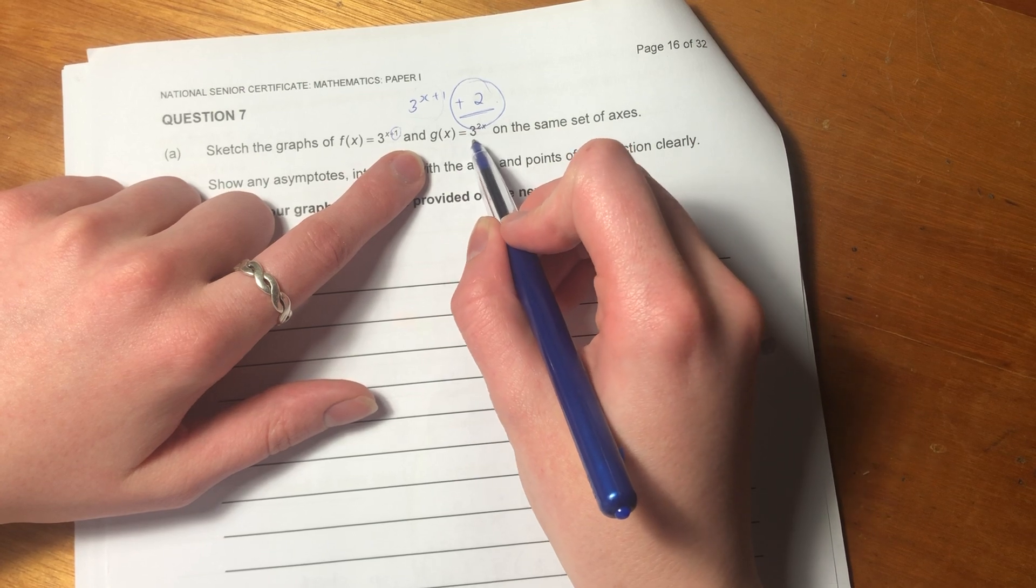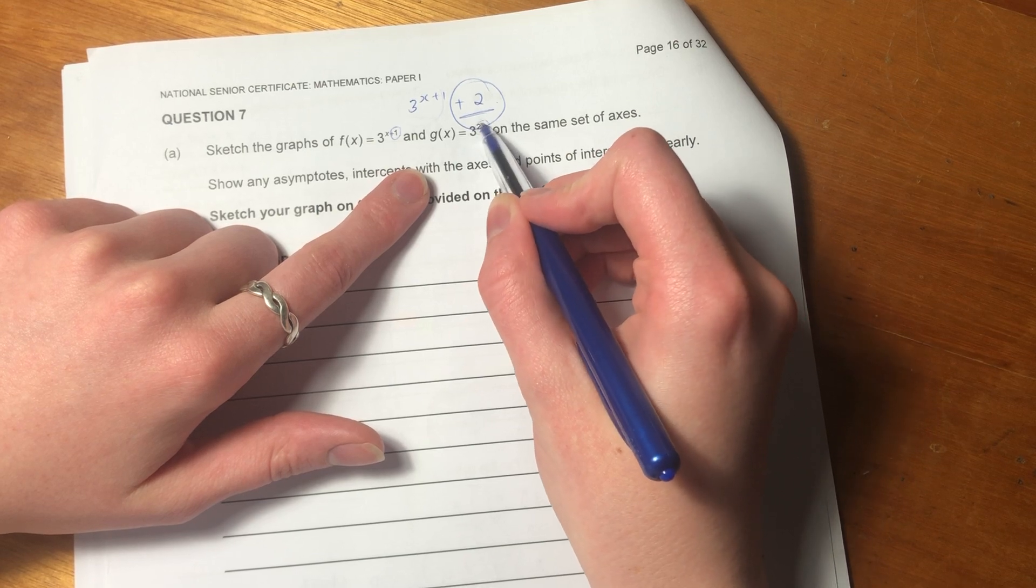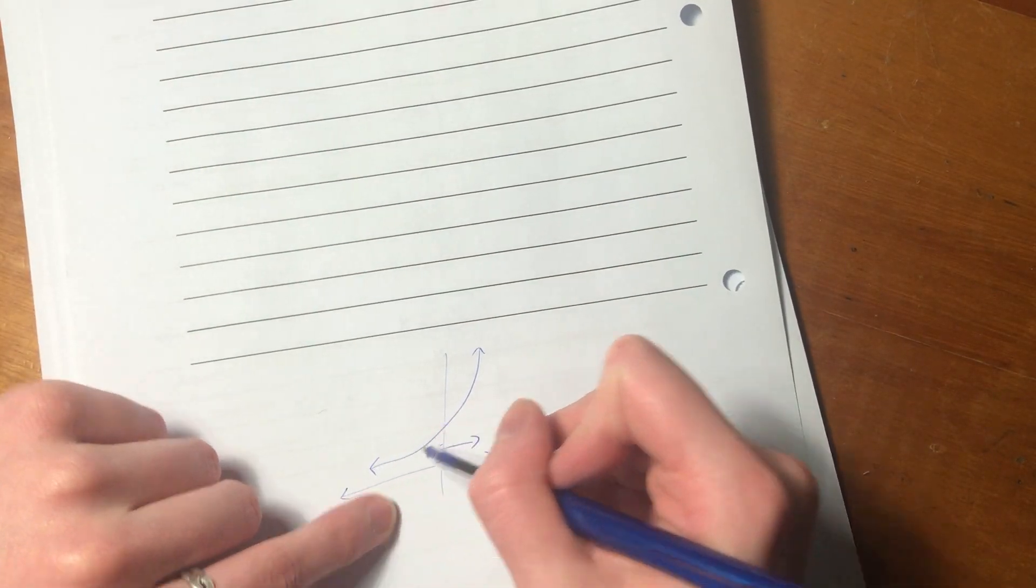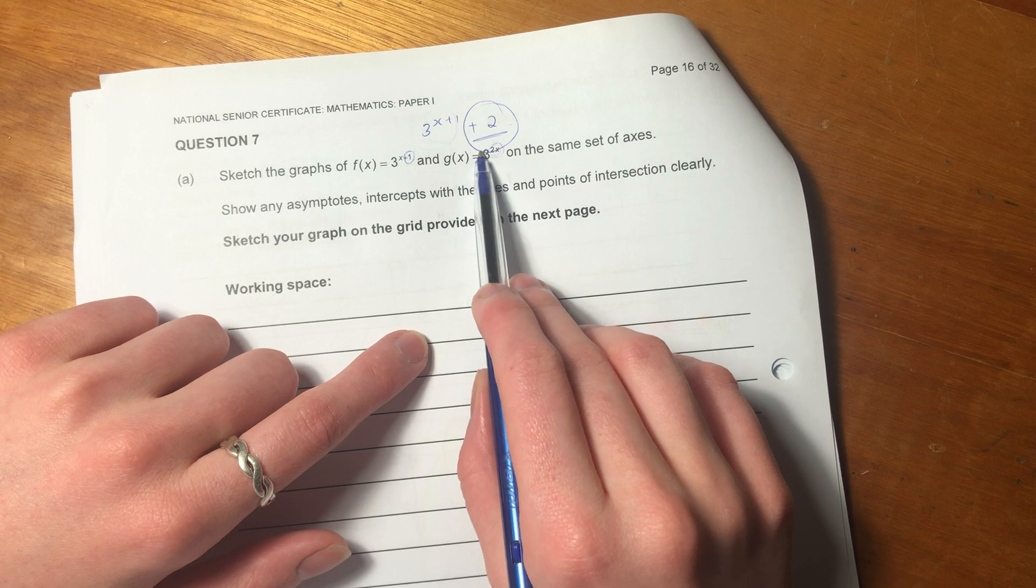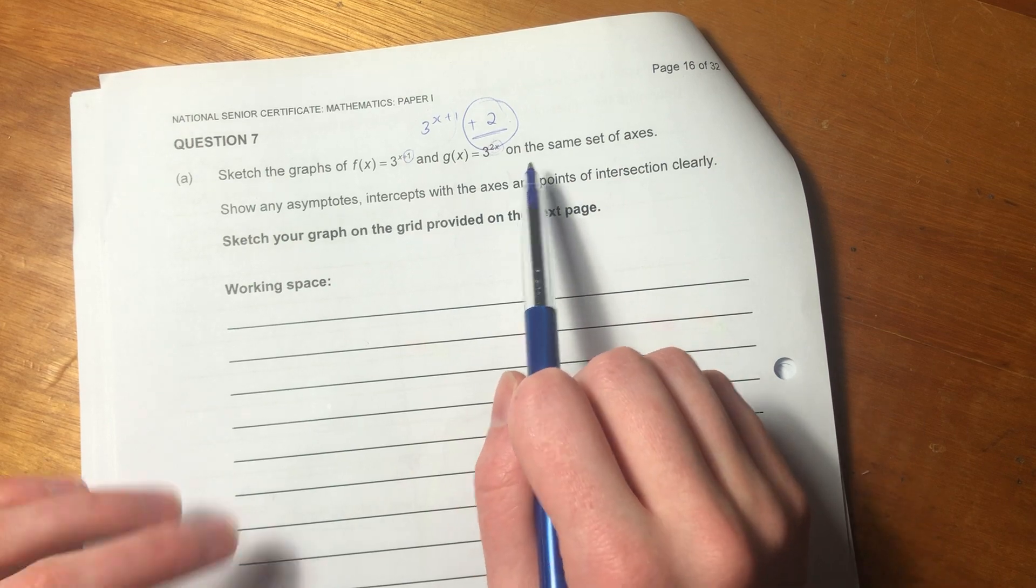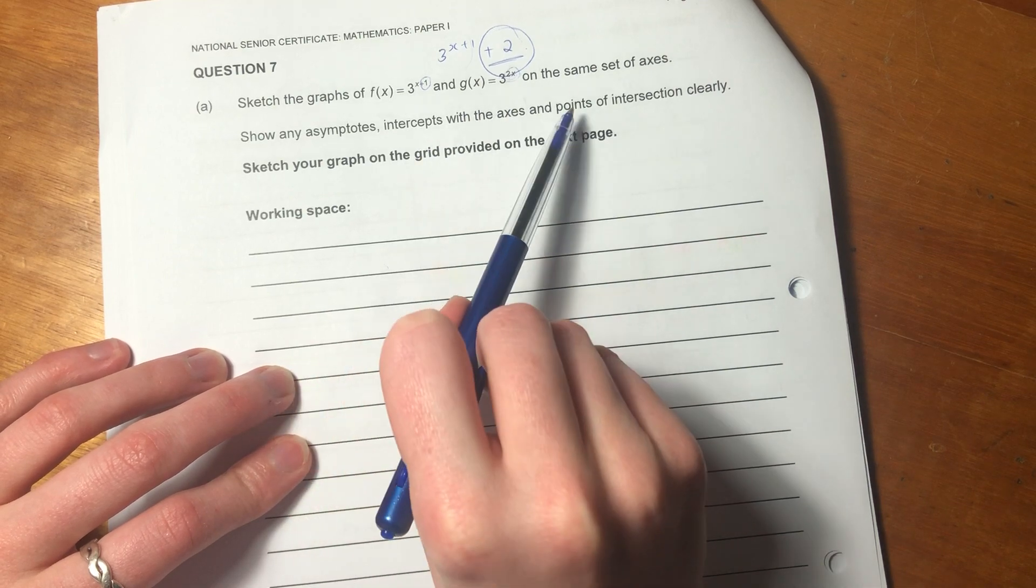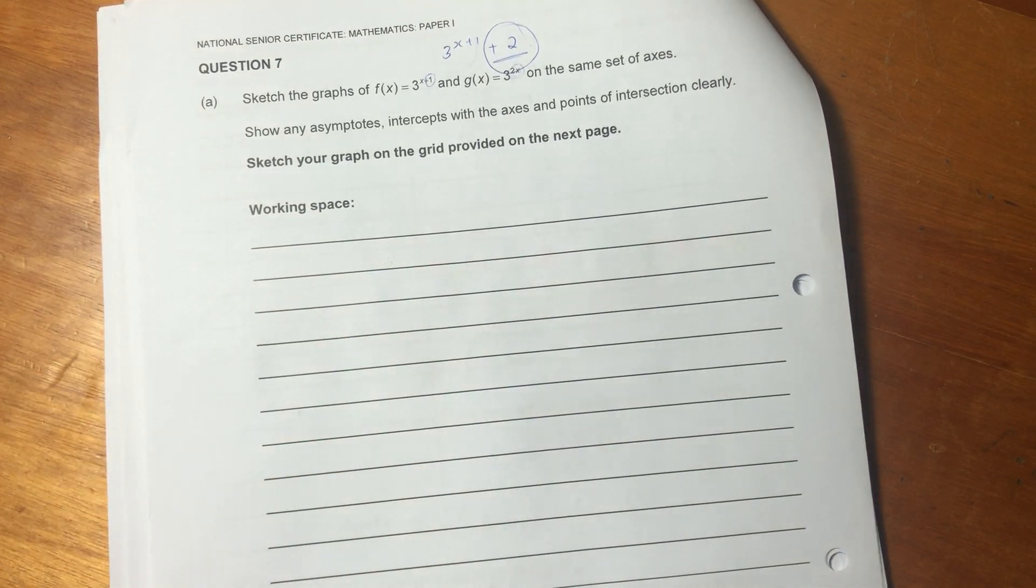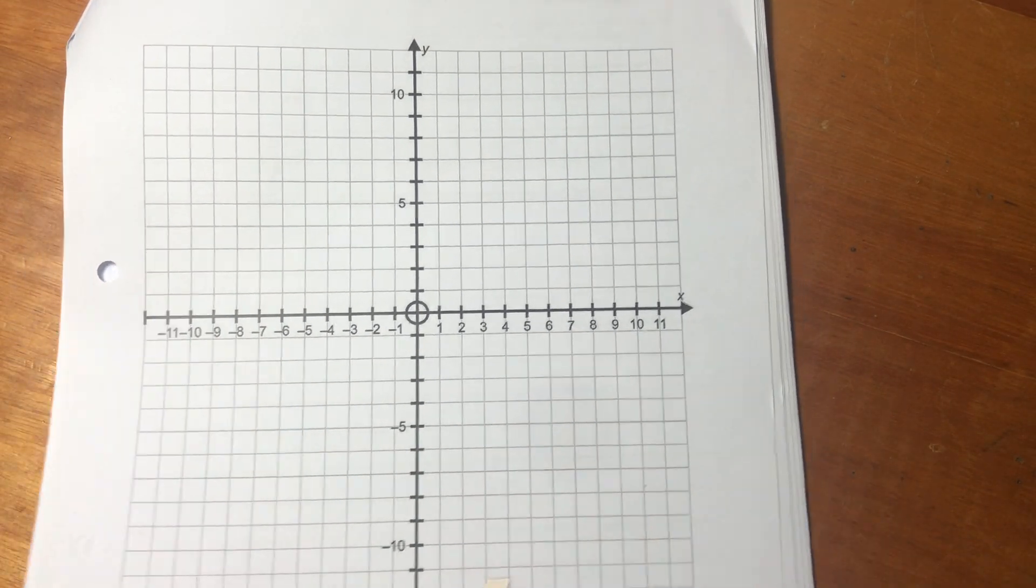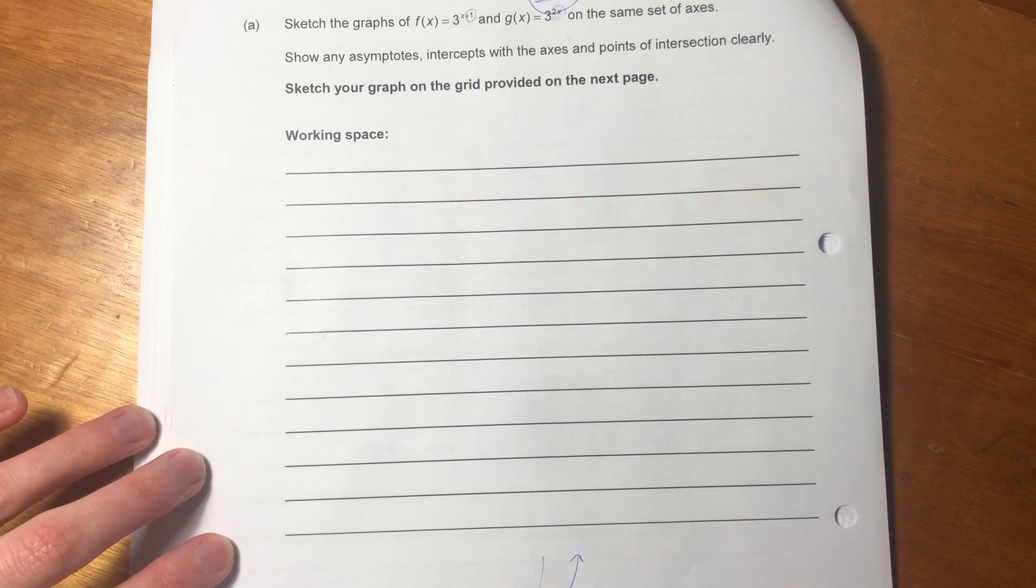Then it says g(x) equals 3 to the power of 2x. So again, it's exponential, but our variable has a coefficient, so it just means that our rate at which it increases is going to be two times what it would be if there was just a 1 in front of the x. So that's that. It says we must do it on the same set of axes. And it says show any asymptotes, intercepts with the axes, and points of intersection clearly. So it's actually quite a few things they're asking us to do, and it's for six marks. I'm going to sketch in pen. Please don't do that. But sketch in pencil.